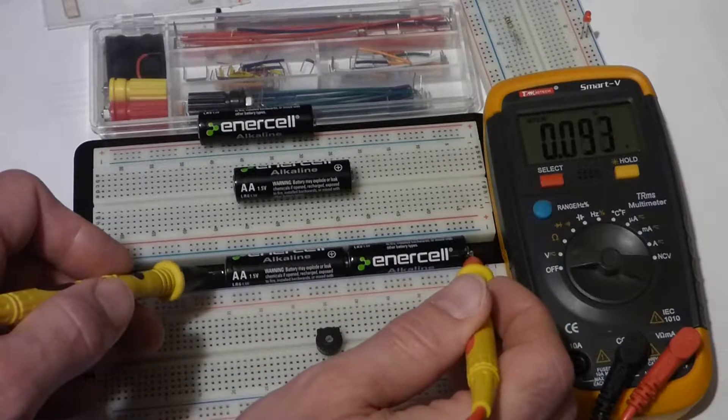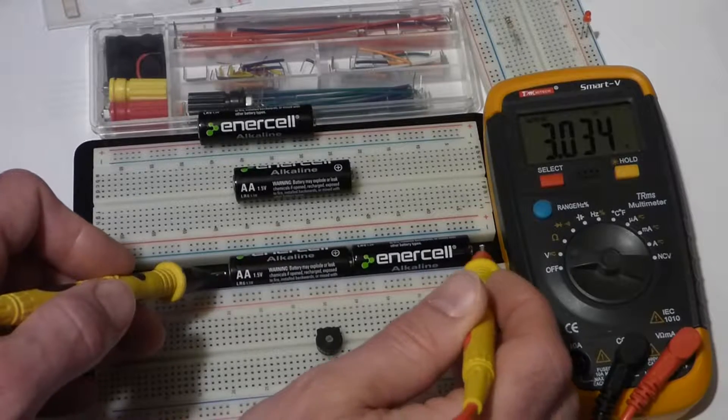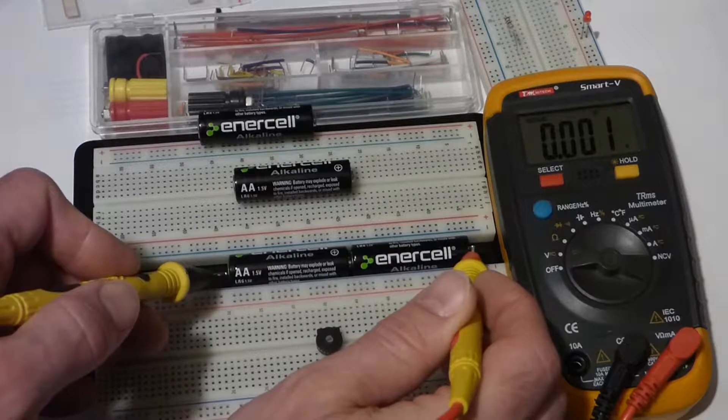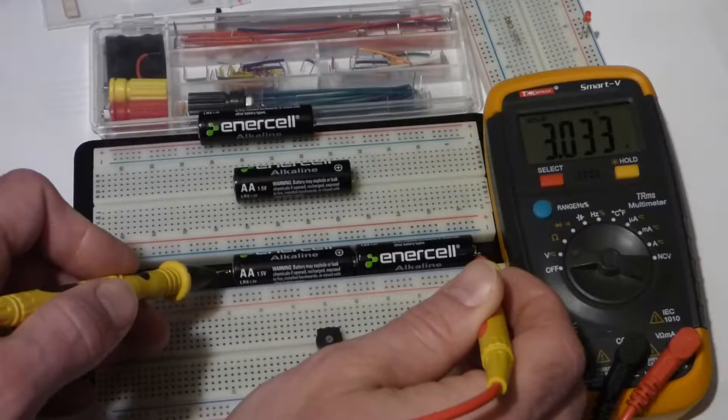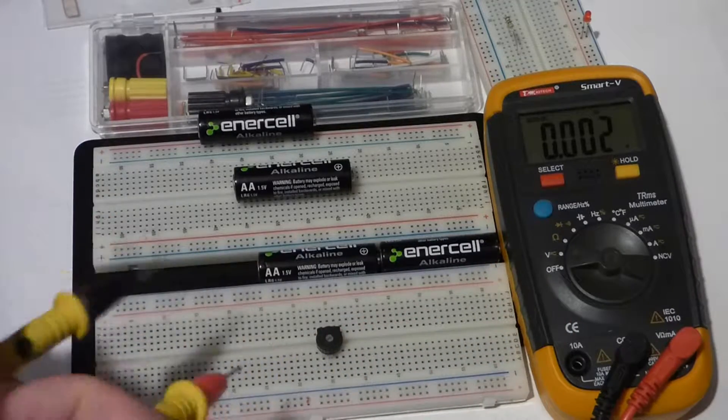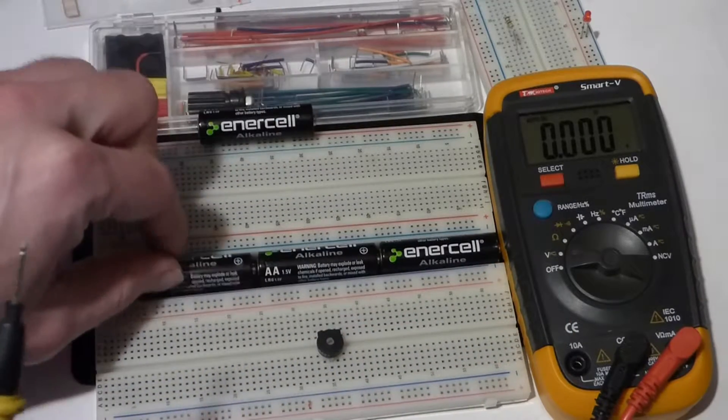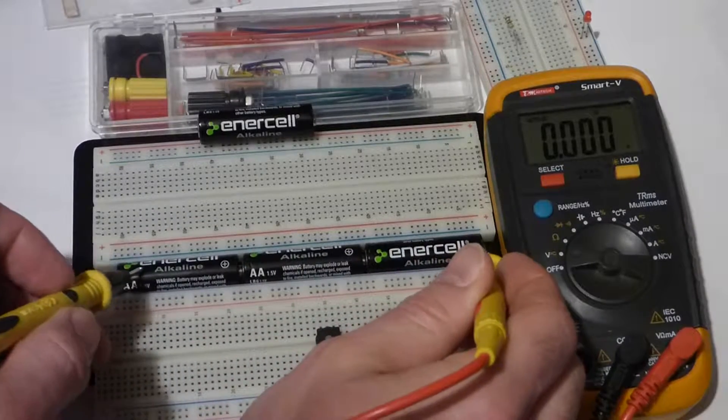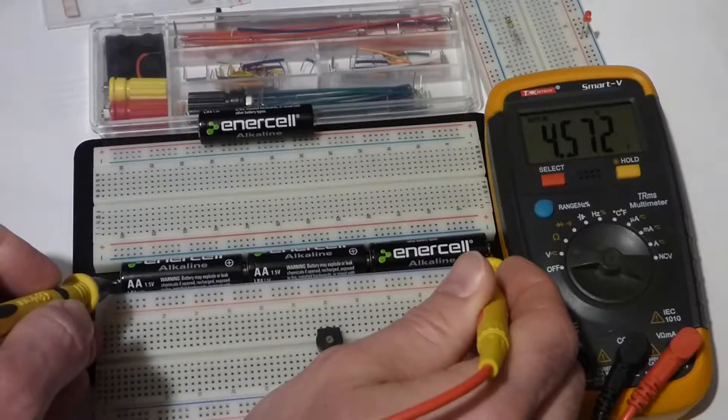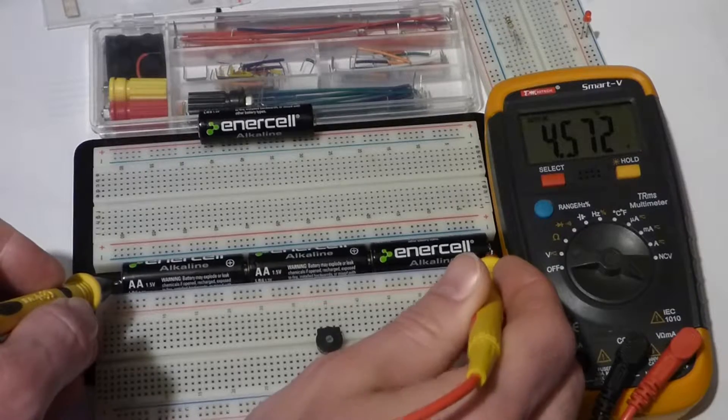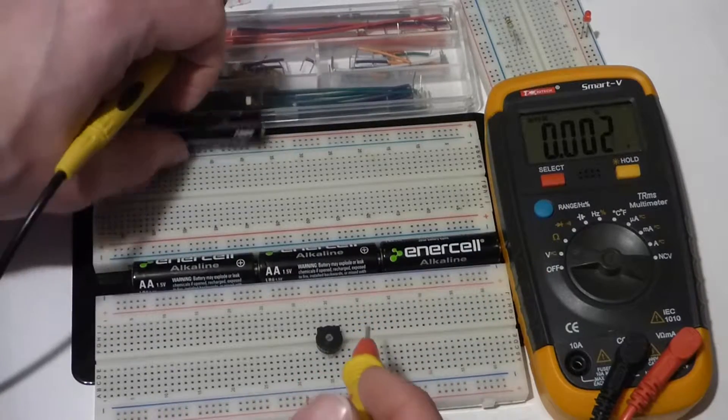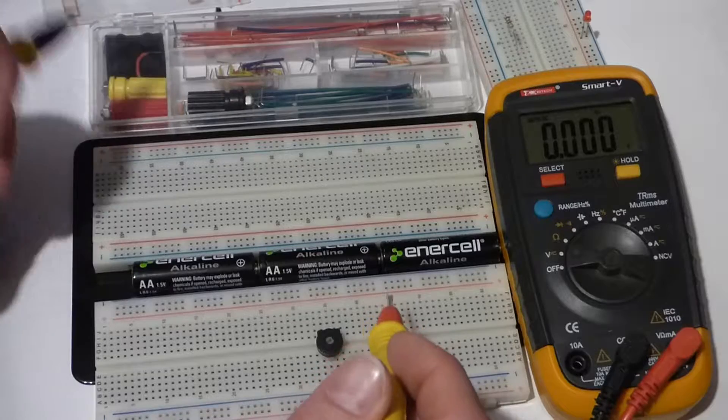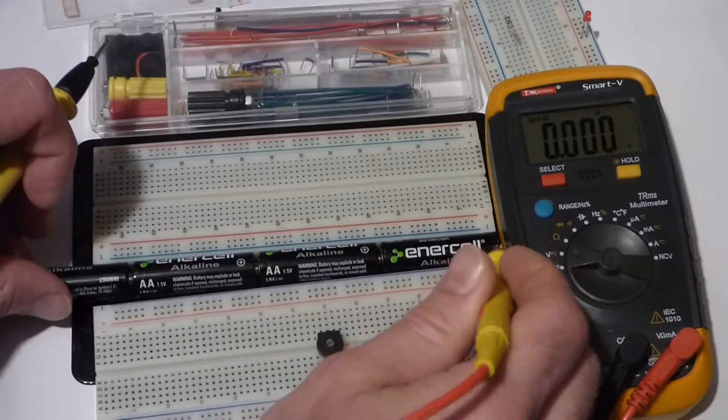And I can just keep doing that pretty much as much as I want. I can keep adding batteries. There we have 3 batteries at 4.5 volts, and finally I'll add a fourth battery and you can see we get up to 6 volts, so we can increase the voltage.